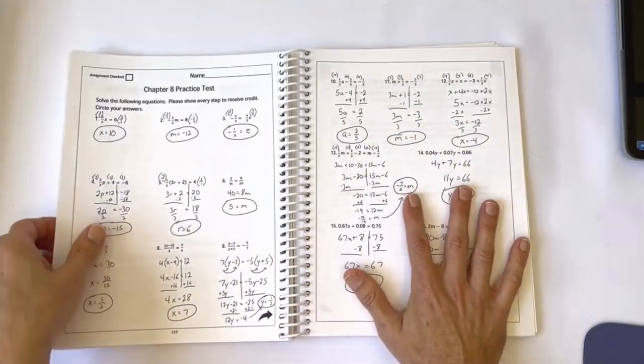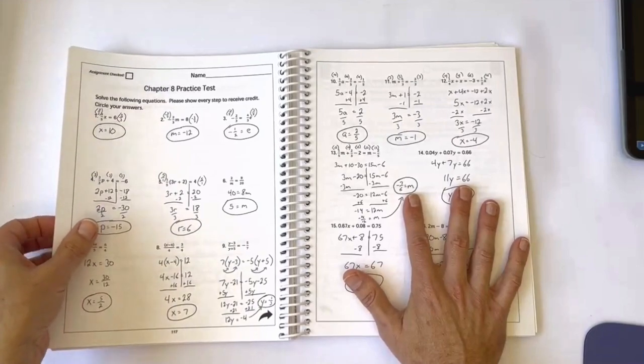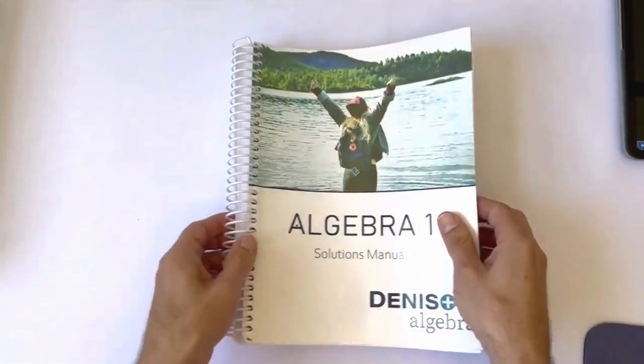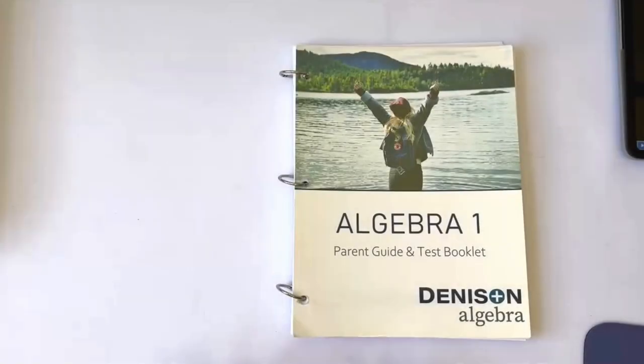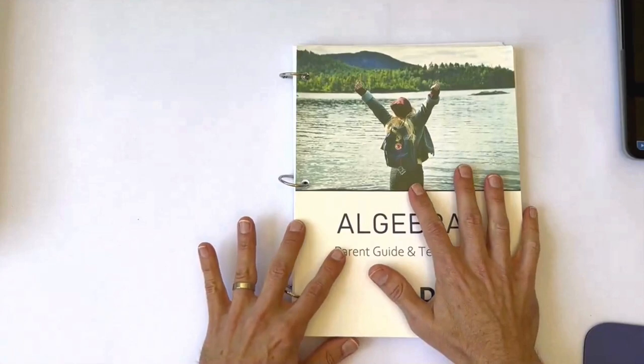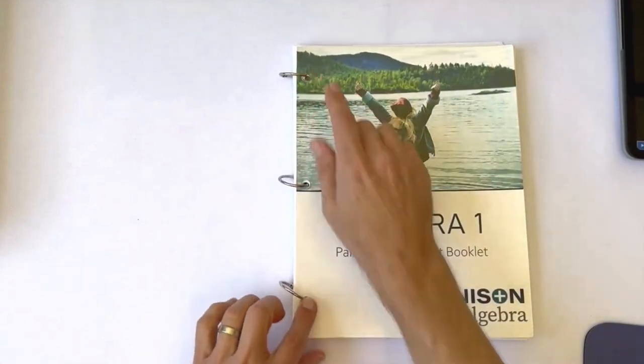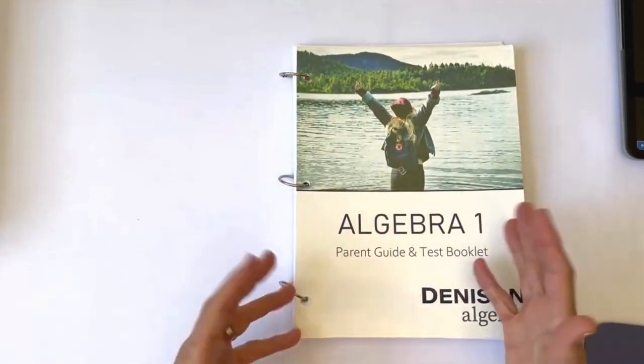This manual just has the homework solutions, not the test solutions. The test solutions are in the parent guide. The parent guide is not bound. It is three hole punch so you can hand the chapter tests to your student.